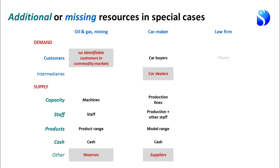Lastly, in the case of professional firms, physical capacity is not so important. The capacity of a law firm consists of the lawyers it employs; the capacity of an architectural firm consists of the architects it employs. Physical capacity in the form of offices is somewhat relevant, but the critical capacity issue is the professional staff themselves.